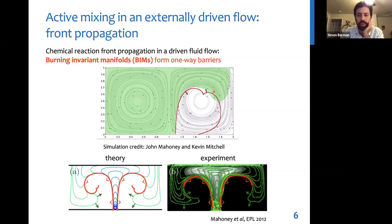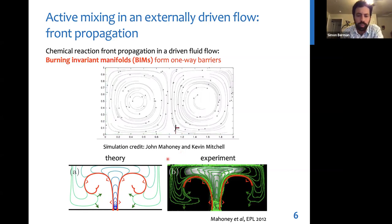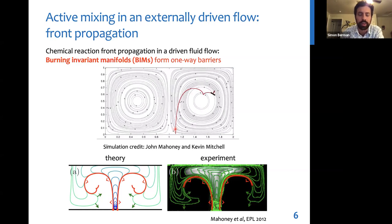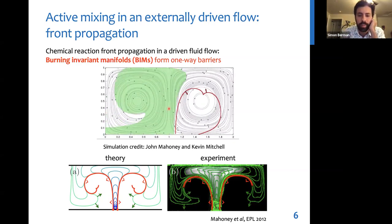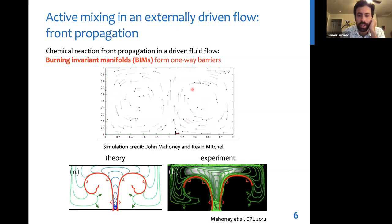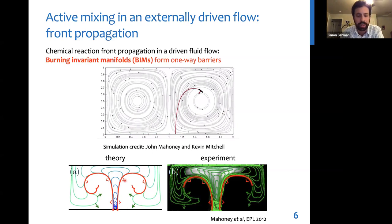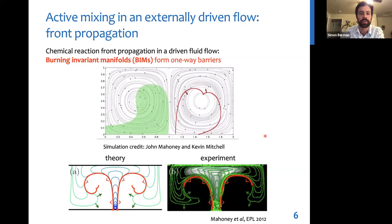But then when you add the motion of the fluid, then there's a combined advection and reaction taking place. And through this joint project, it was determined that this structure is in fact a generalization of an invariant manifold called a burning invariant manifold or BIM, which turns out to be a one-way barrier to the motion of a propagating front. And these theoretically predicted BIMs were also confirmed in experiments from Tom Solomon's lab.